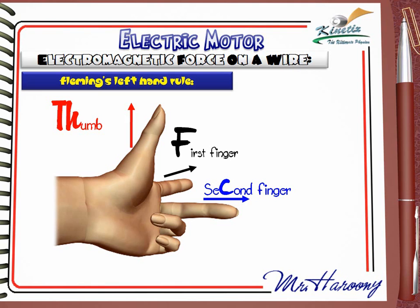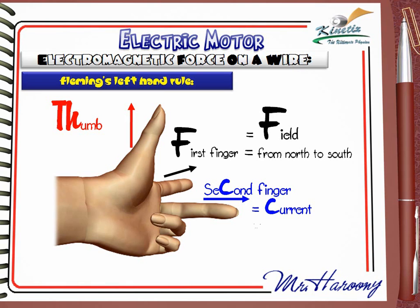The first finger points in the direction of the magnetic field, from north to south. The second finger points in the direction of the conventional current, from positive to negative. If these two fingers are applied correctly to the case, the thumb points in the direction of the pushing force — the thrust. Many examples with patience are needed to understand this perfectly.